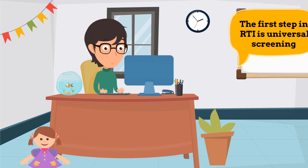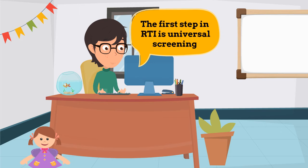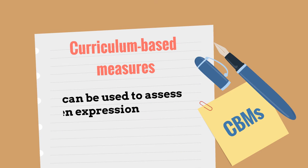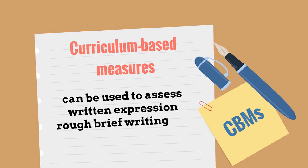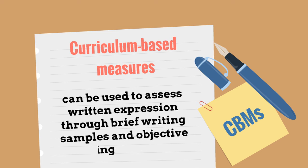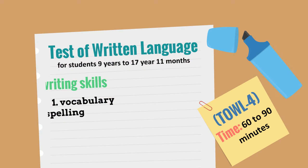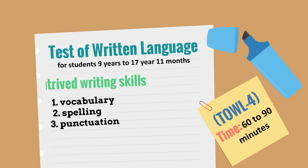The first step in RTI is universal screening to identify students at risk of future writing difficulties. You can screen students by using curriculum-based measures that assess written expression through brief writing samples and objective scoring. But for a more comprehensive diagnostic test of written expression, utilise the Test of Written Language, 4th edition.